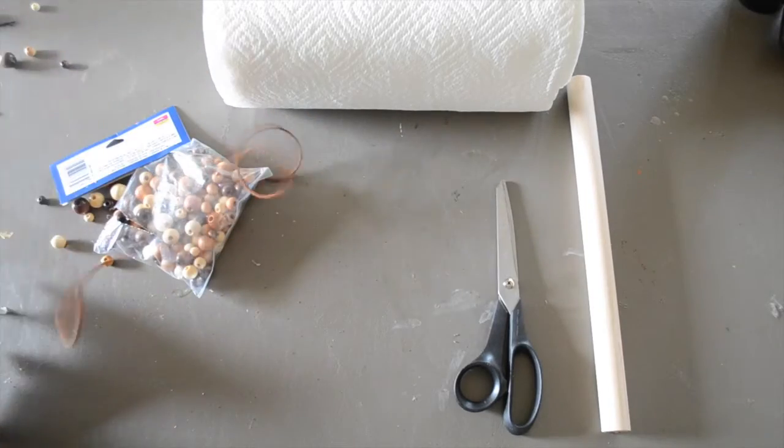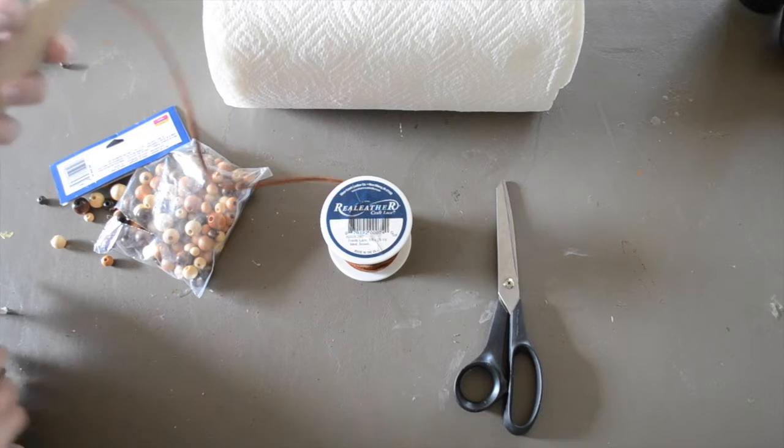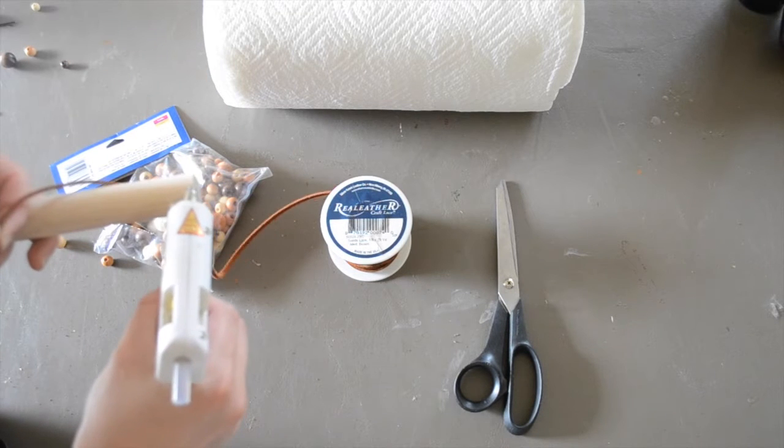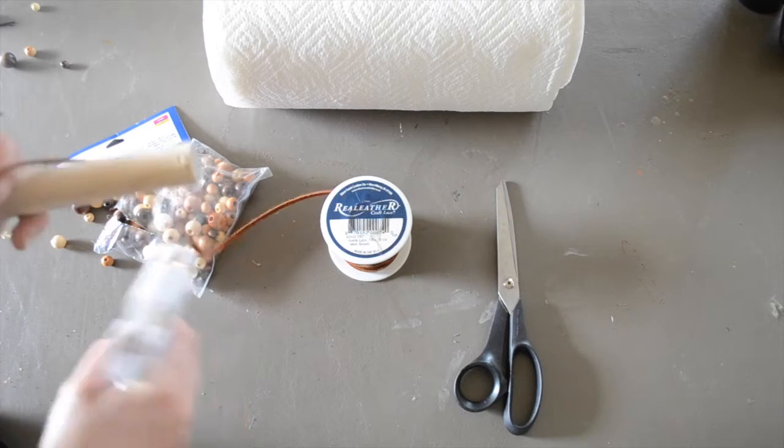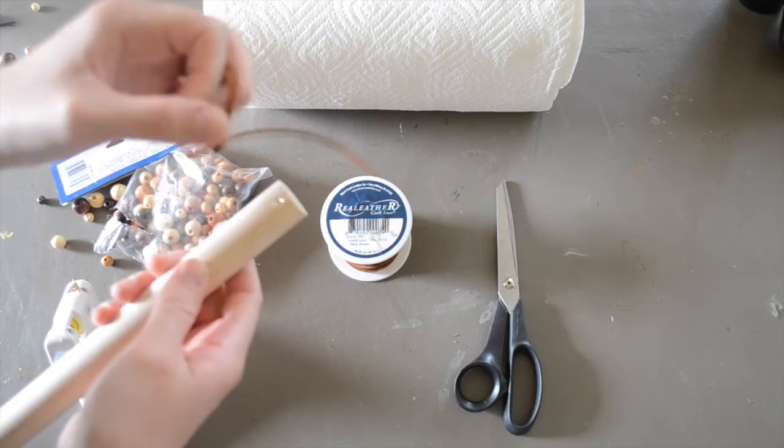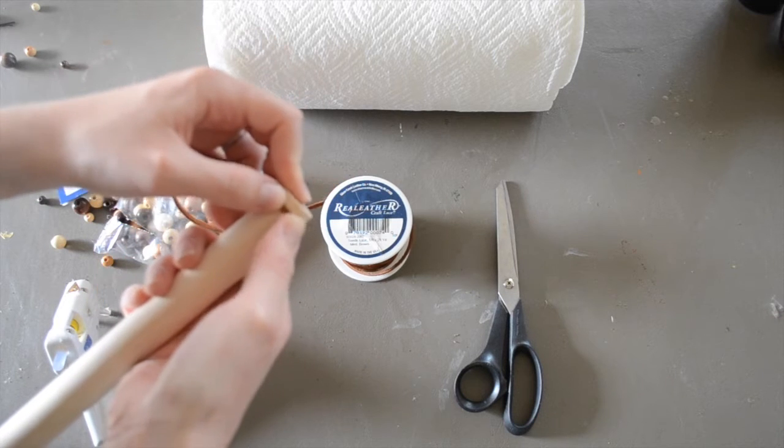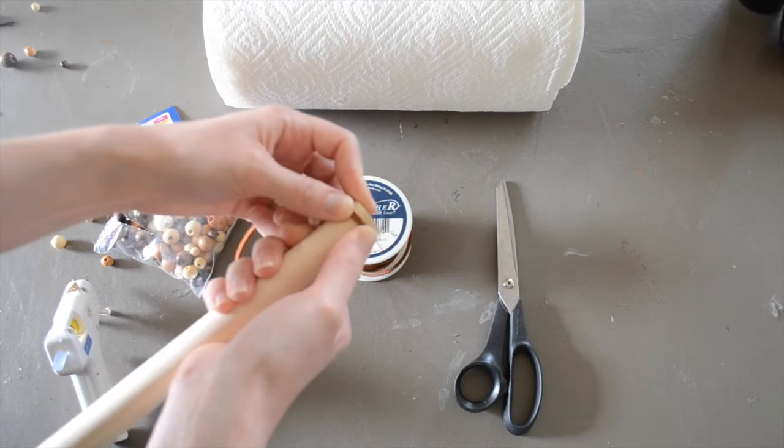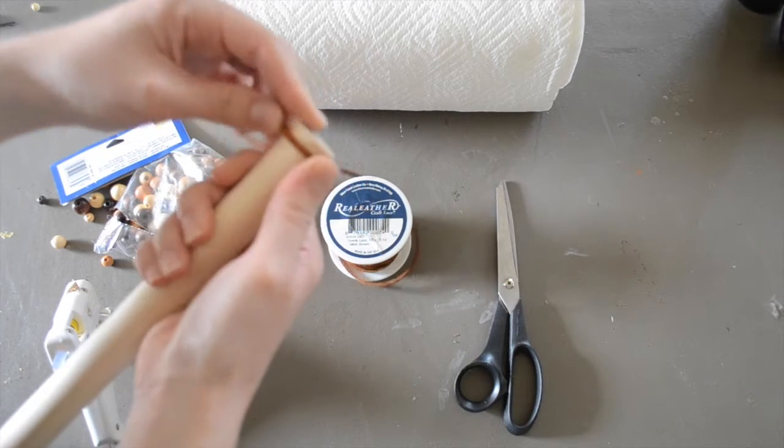So I'm going to go ahead and apply a drop of hot glue to the very end of my dowel and place the leather cord in it just like that. And you really want this to dry securely because this has got to hold the weight of your entire paper towel rack.